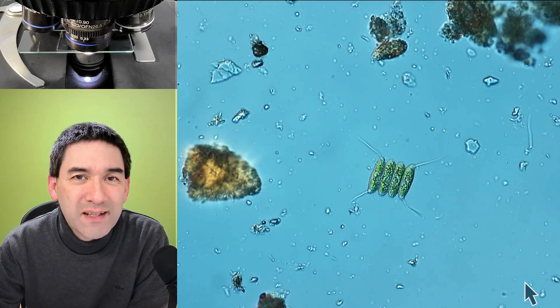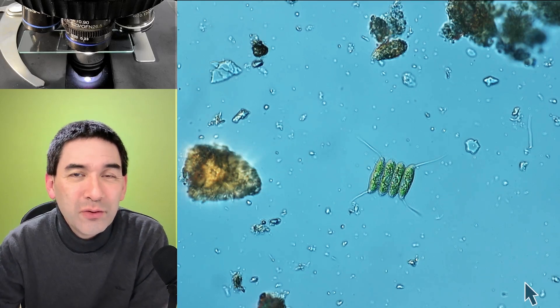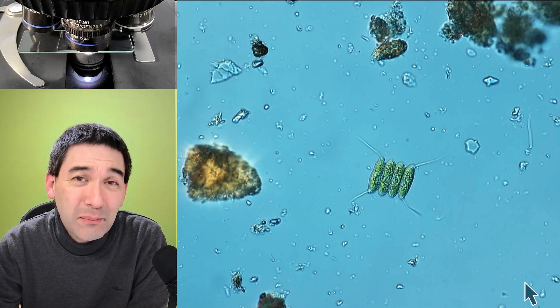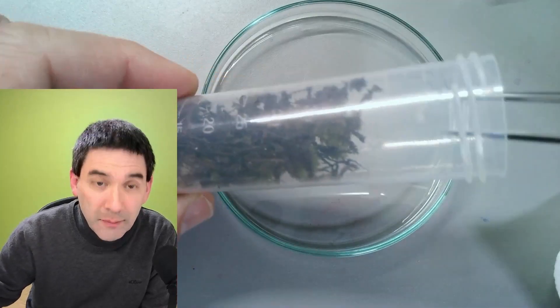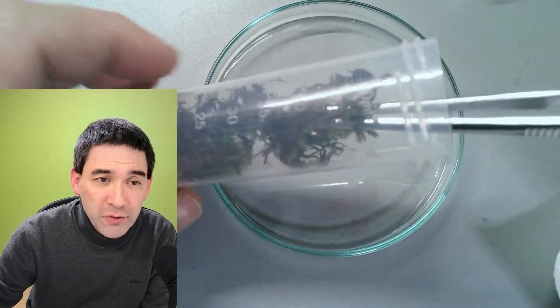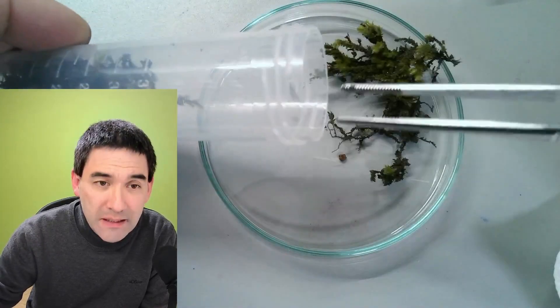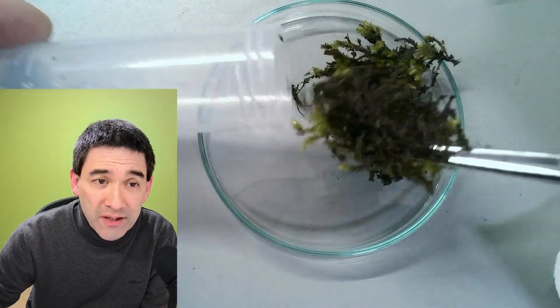So I think what I'm going to do now is I'm going to move on to the next sample and let's put the moss under the microscope. Now in order to put the moss under the microscope I first have to add a little bit of water and keep it moist for a couple of hours because then any microorganisms and hopefully also tardigrades will come back to life.